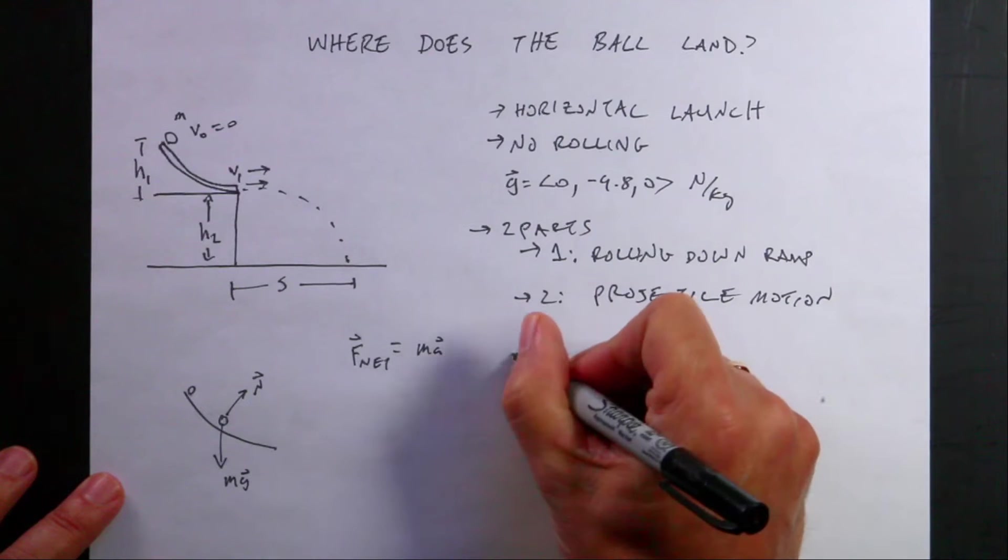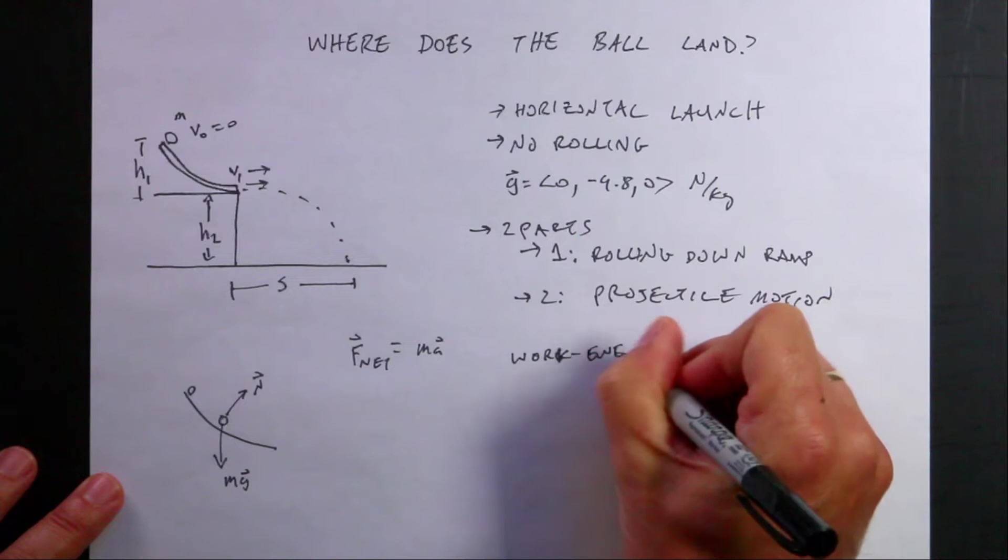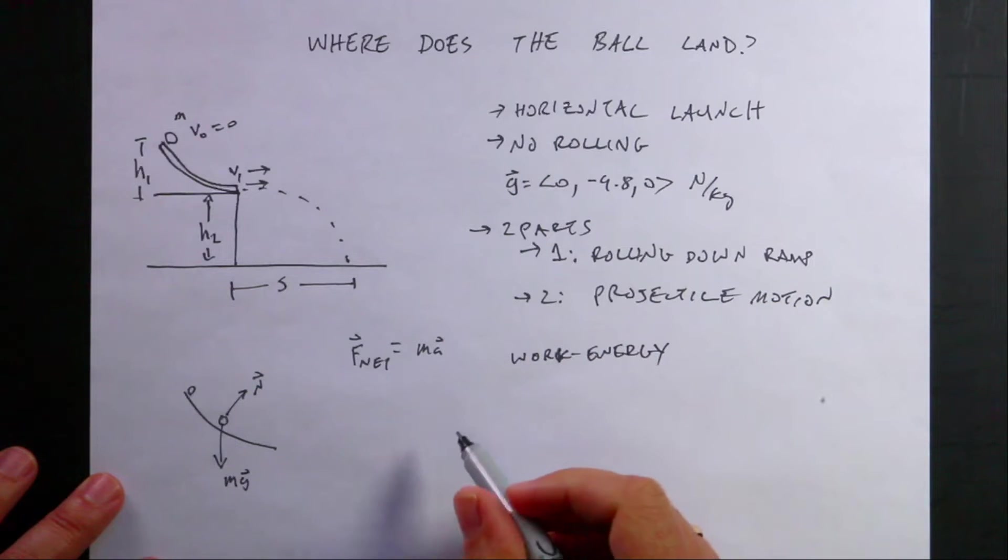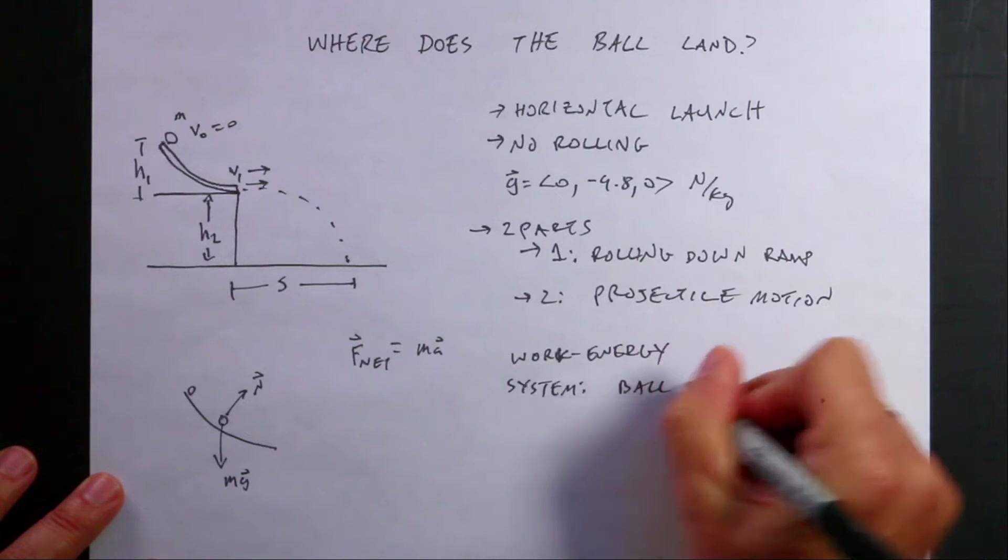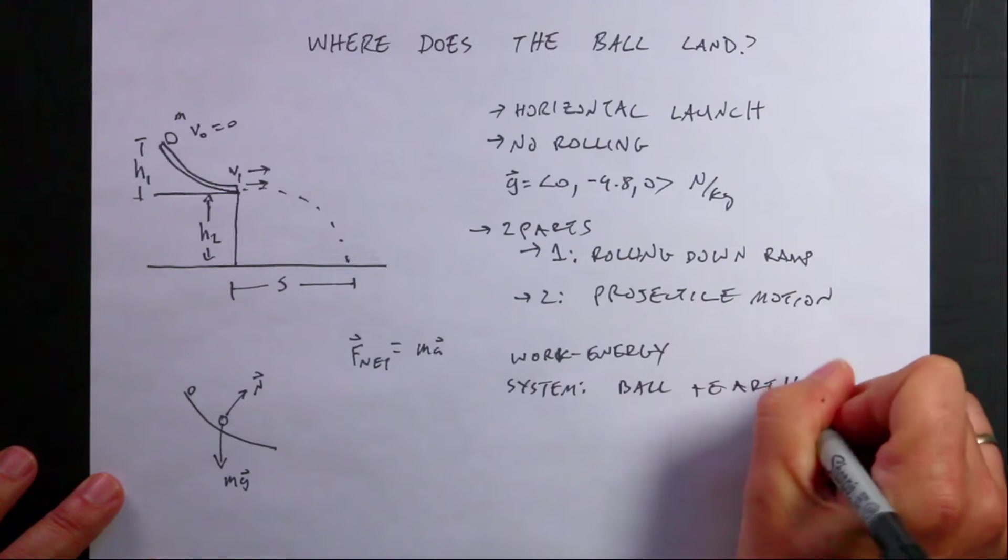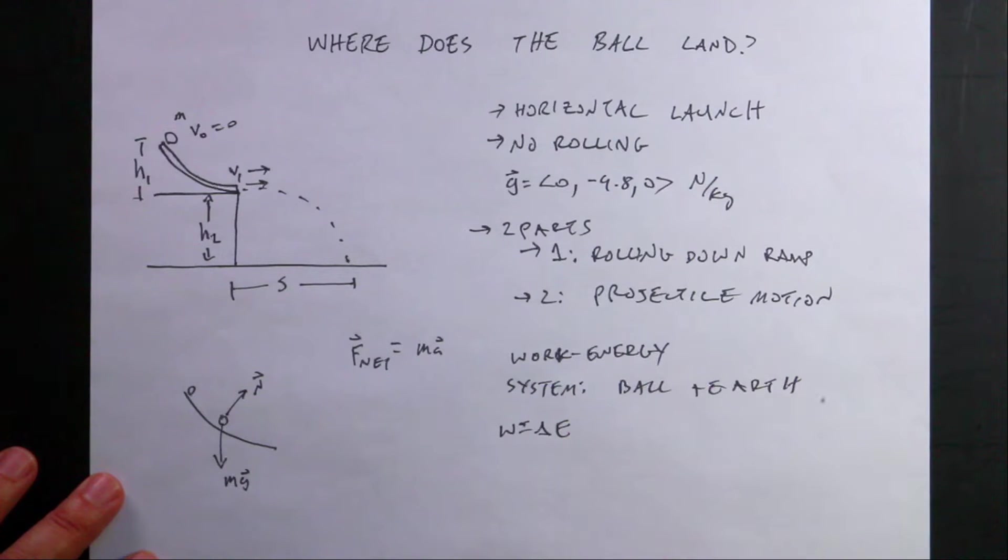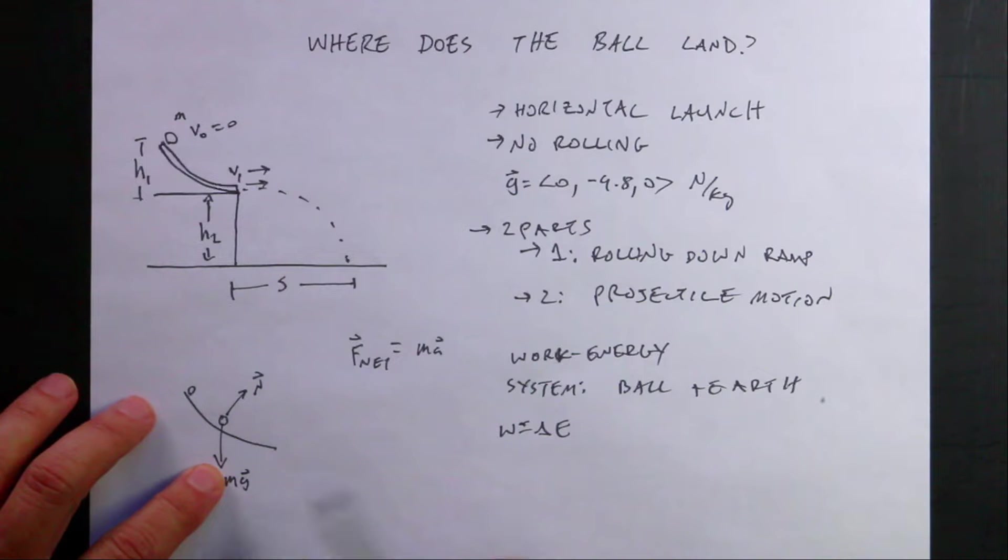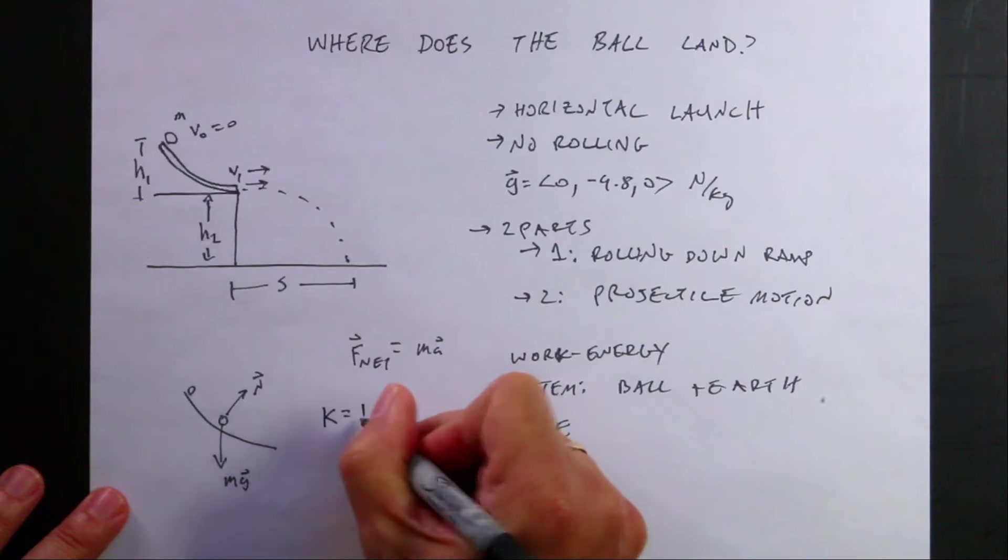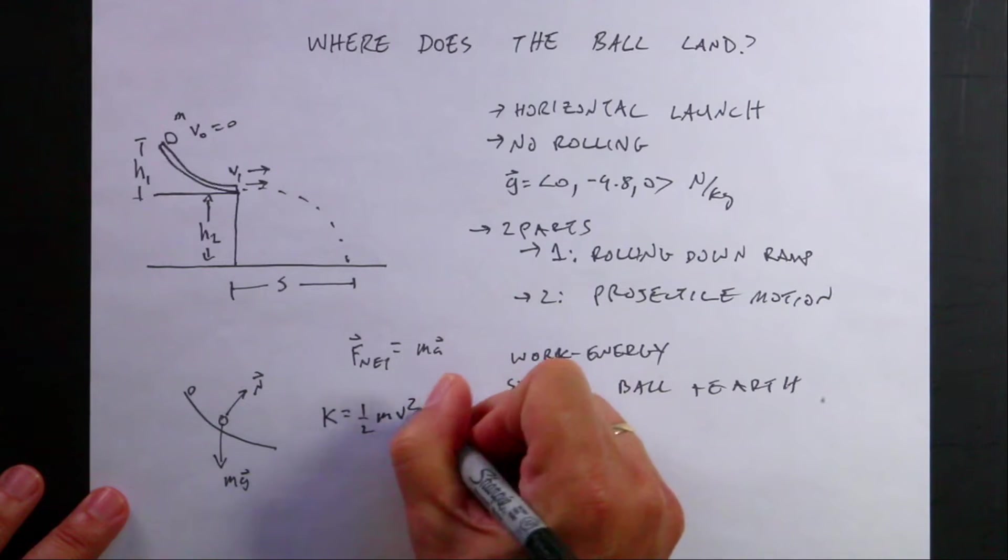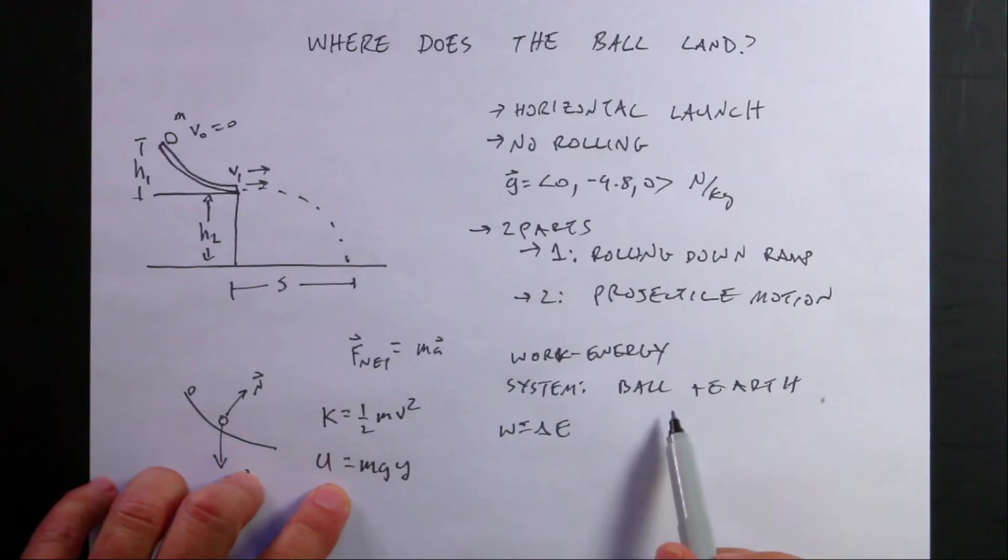But I can use work energy. So if I use work energy and pick the system, in this case I'm going to pick the system of the ball plus the earth, then I can say work is a change in energy. And what forces are going to do work on my system? Well, I don't have work done by gravity because it's part of my system. The ball and the earth are in my system. So I have two types of energy. I'll have kinetic energy, one-half mv squared, and gravitational potential energy, mgy. And I have this because the earth is part of my system.